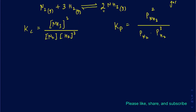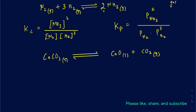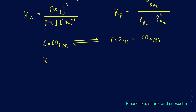Now suppose I have a reaction where CaCO3 solid is in equilibrium with calcium oxide (CaO, solid) plus carbon dioxide (gas). When writing the Kc expression, remember we don't include solids because their concentration does not affect the equilibrium constant. So it's just going to be the concentration of CO2 to the power 1.